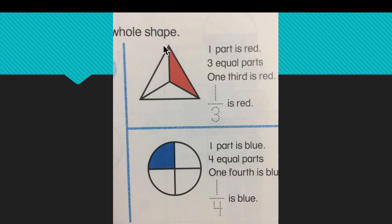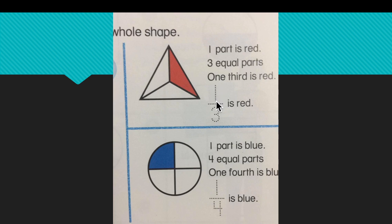Fractions can show how many parts of a whole are shaded. Here we have a triangle. How many parts is this shape divided into? One, two, three — three equal parts. So we write number three under the line. How many of these three parts is colored red? Only one part is colored red, so I write number one on the top. We read this fraction one-third, because one out of three parts is shaded. One-third of the triangle is shaded.